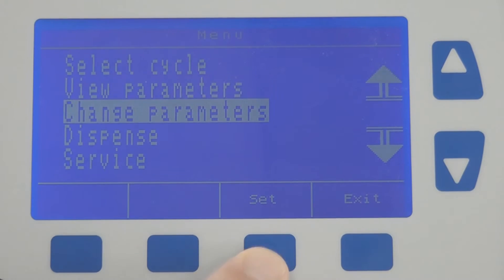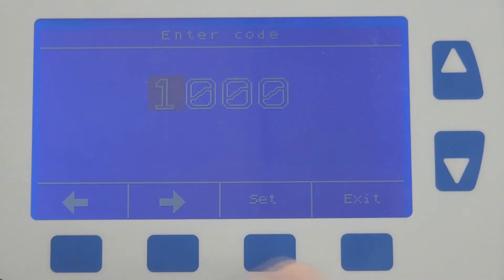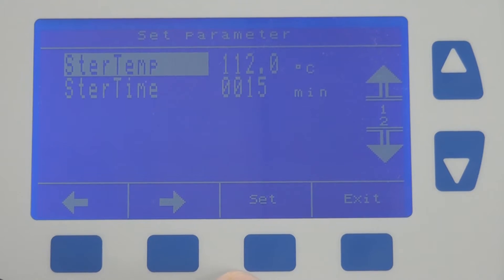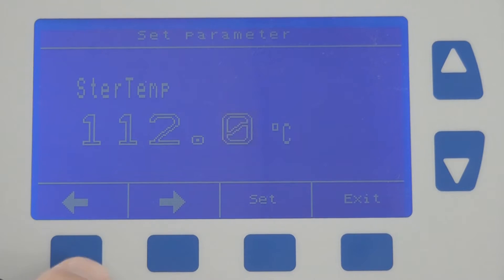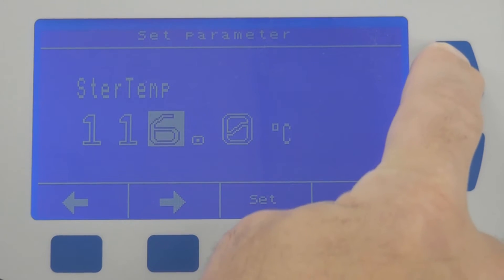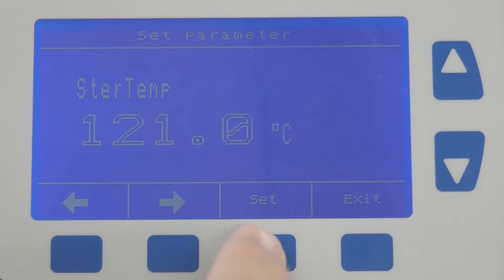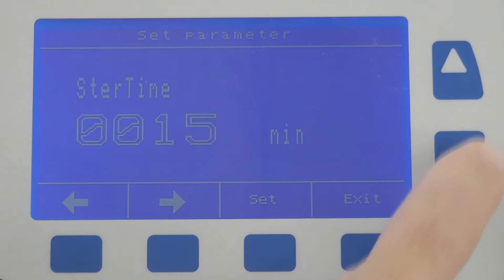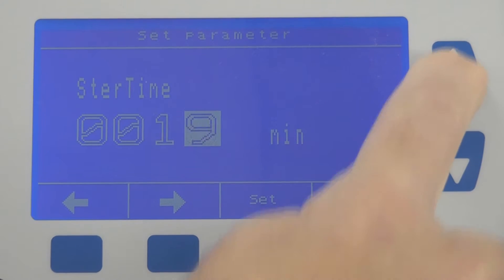Programming the media prep system is very straightforward. After entering an access code, simply select the parameter you wish to change. In this case, we are going to change sterilization temperature from 112 degrees Celsius to 121 degrees Celsius, and sterilization time from 15 minutes to 20 minutes.